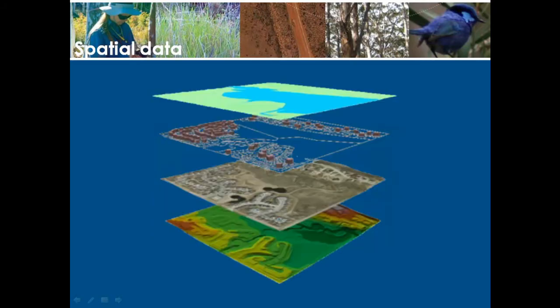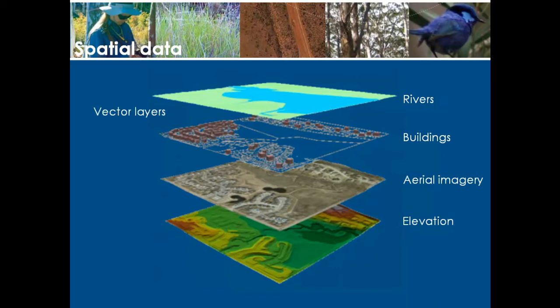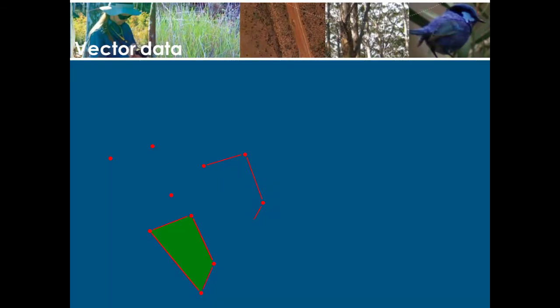A geographic information system overlays layers of information called spatial data. These layers each represent a theme — one layer could represent rivers, and these could overlay buildings and satellite imagery. In industry-speak, there are two fundamentally different types of spatial data called vector and raster. Vector layers consist of points, lines, or areas, and can describe anything from lakes to roads to property boundaries and fauna habitat.